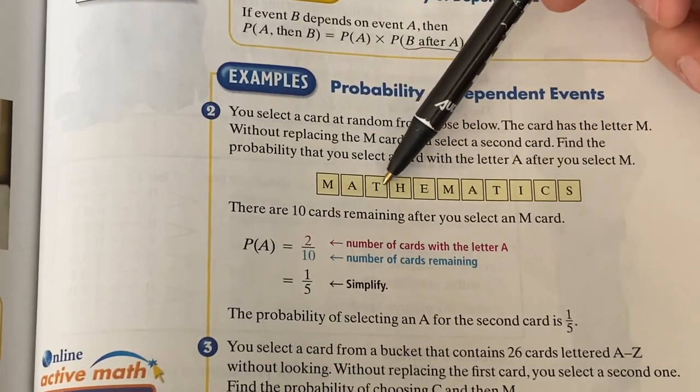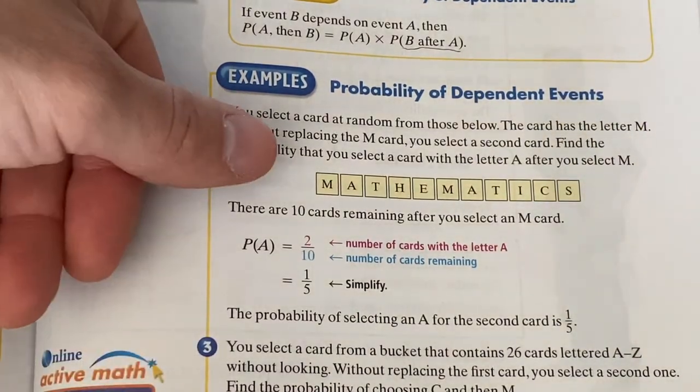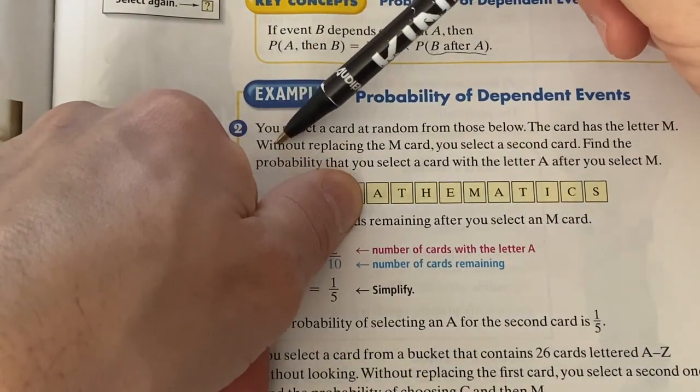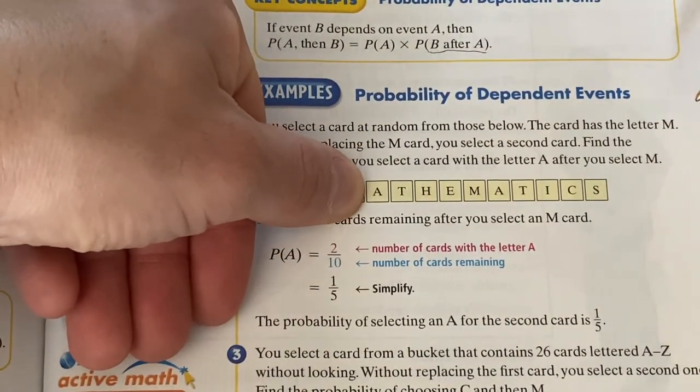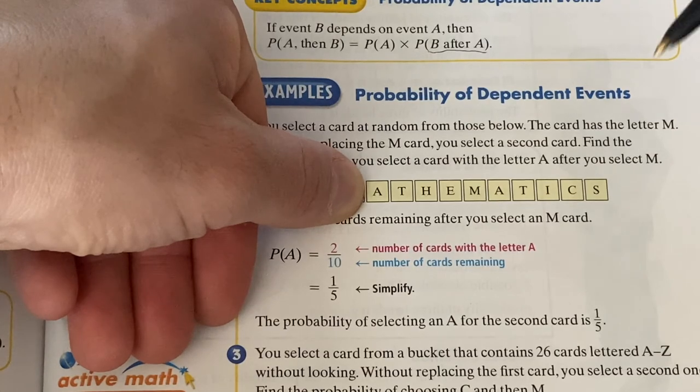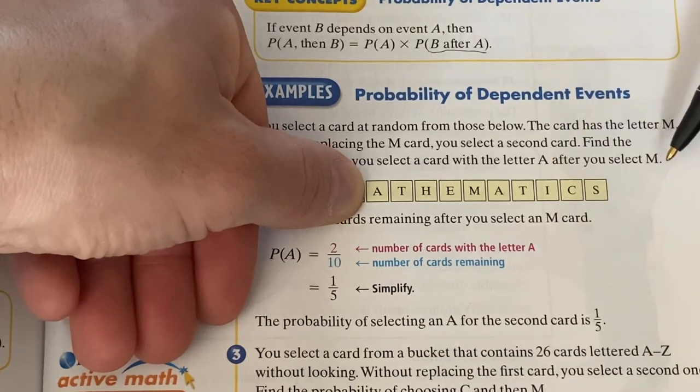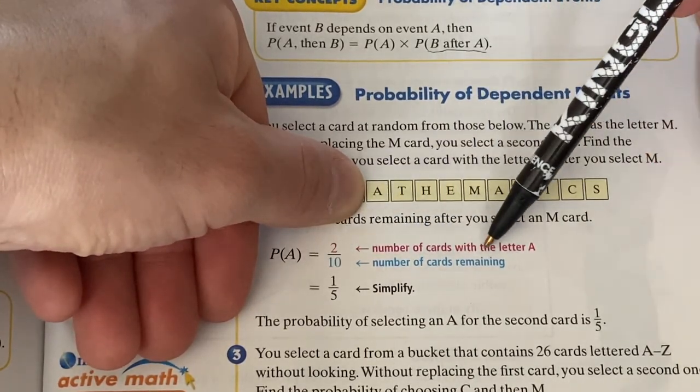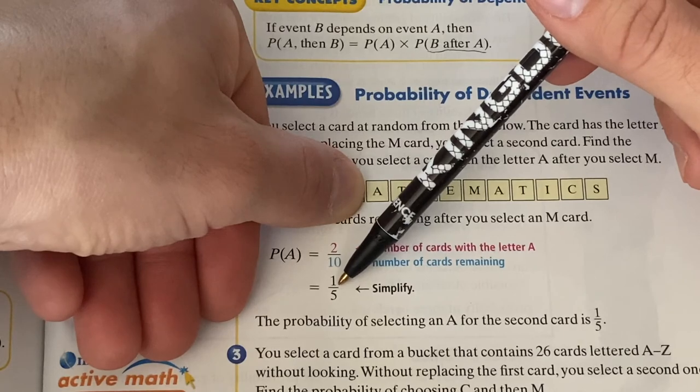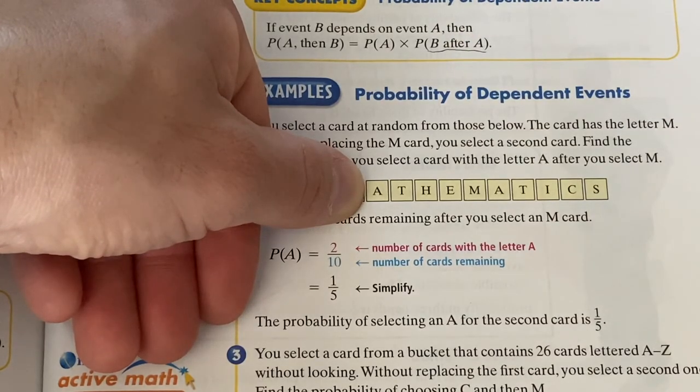Let's take a look here at the letters we've got. So mathematics has how many letters? One, two, three, four, five, six, seven, eight, nine, ten, eleven. We selected an M. So that means one of these M's is gone. So now, and we are not putting it back, it says without replacing. So if we don't put that M back, now how many cards are left? One, two, three, four, five, six, seven, eight, nine, ten. And how many of them are A's? One, two A's. So what's the probability of getting an A after the M is gone? There are two A's. And now there are ten cards because the M is gone, remember. And two out of ten is that probability. Always simplify probabilities, one out of five. So there was no multiplying in this problem. It was just wanting that second piece probability.